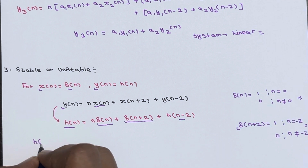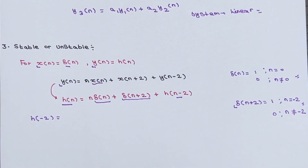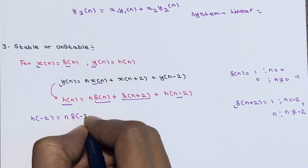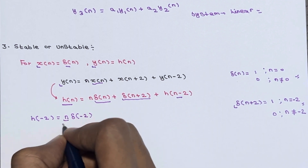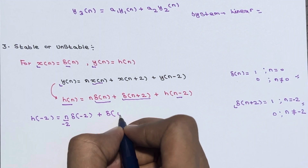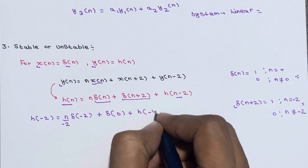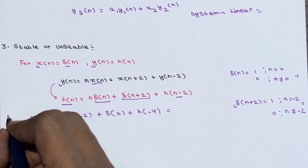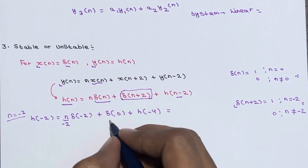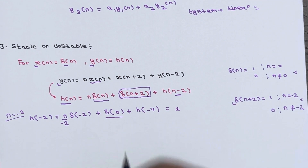Let us calculate h(−2): h(−2) = (−2)·δ(−2) + δ(0) + h(−4). Here δ(−2) = 0, and δ(0) = 1 since at n = −2 the term δ(n+2) equals 1. So h(−2) = 0 + 1 + 0 = 1.